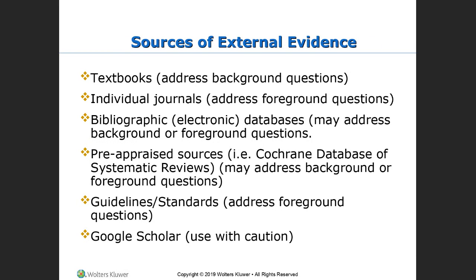When we talk about sources of external evidence, there are a couple different things that you can use. There are textbooks that can be used to address background questions. There are individual journals which can be used to address questions as well. Bibliography or electronic databases may give you information. Pre-appraised sources — such as the Cochrane database of systematic reviews — or websites like the Mayo Clinic may give you information that you would use as well. There are also guidelines and standards to address questions, and you can find those by doing literature searches or by working with whatever professional group you're searching.